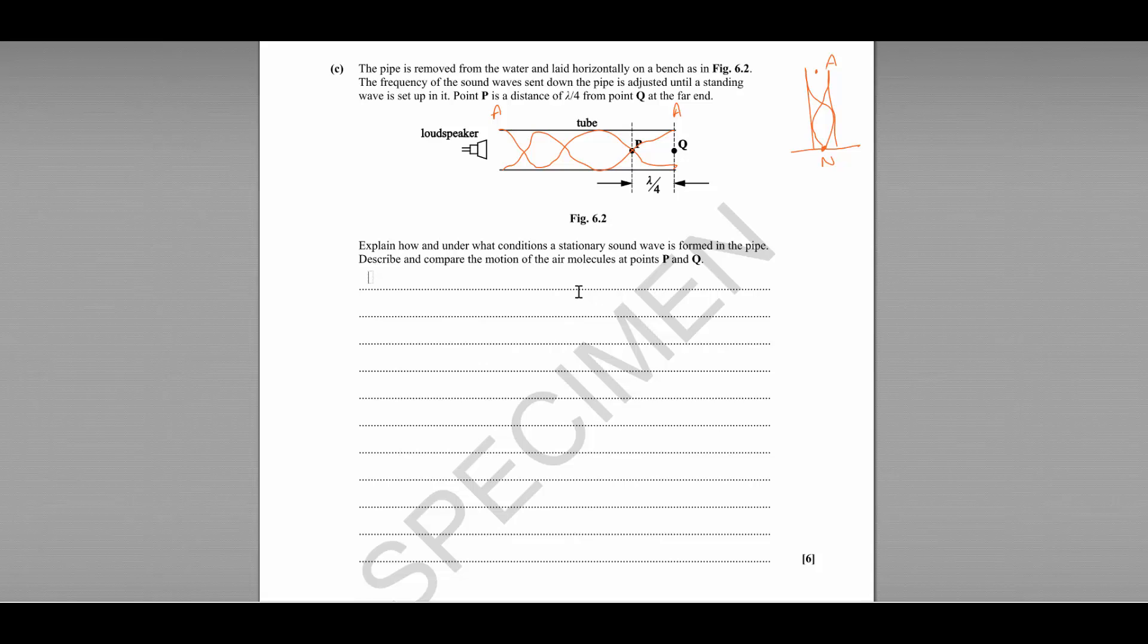So the standing wave is formed because the reflected wave superposes or interferes with the incident wave.